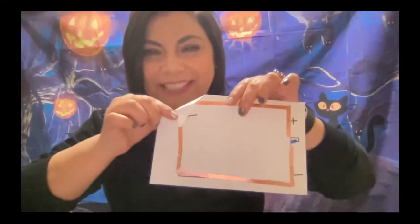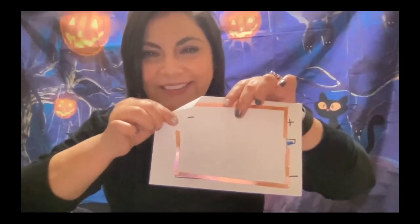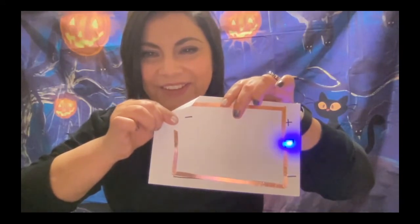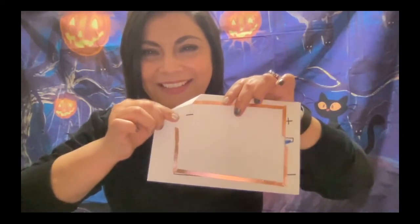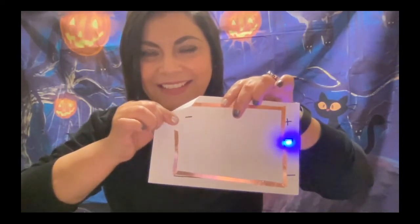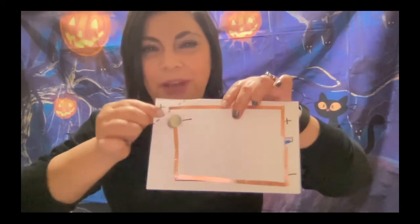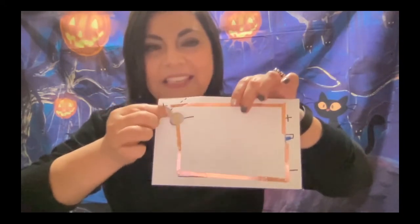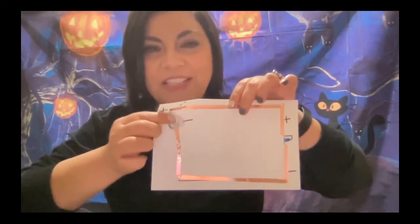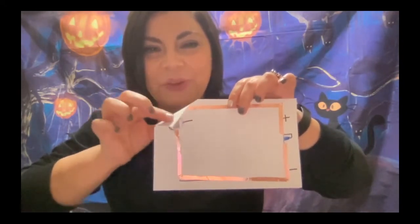I changed the lighting so we can see that better. When the positive side of the copper tape is touching down onto the negative side of the coin battery, you have a circuit that lights up the LED.